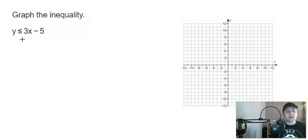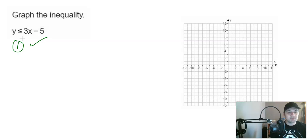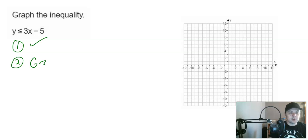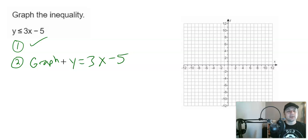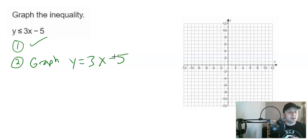Let's graph the inequality y ≤ 3x − 5. Step one — solve for y — is already done. Step two: we're going to graph this as if it were an equation, y = 3x − 5. This is a linear equation, which fits the form y = mx + b, and this chapter makes for a great review of graphing from throughout the semester.